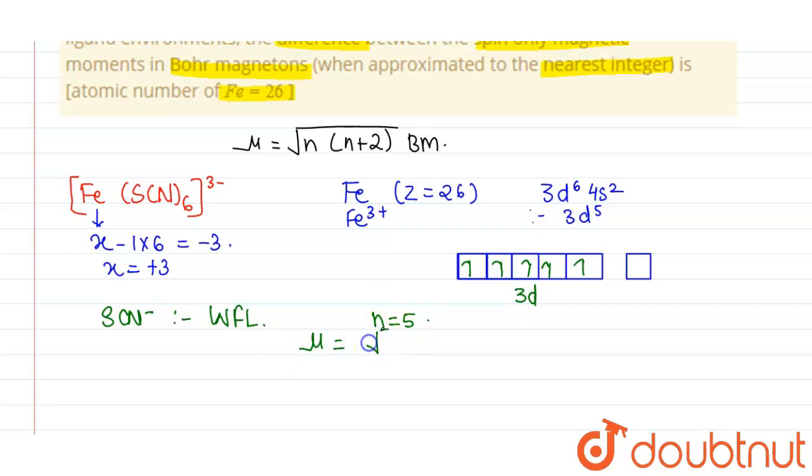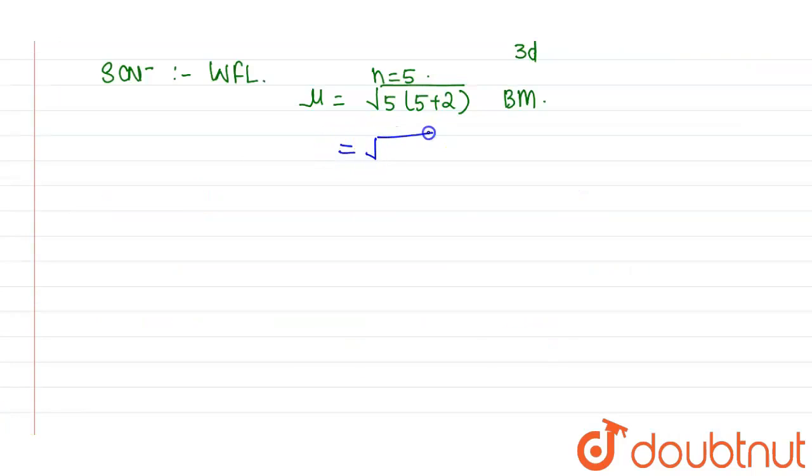The value of mu will be square root of 5 times 7 Bohr magneton. This value is square root 35 BM.